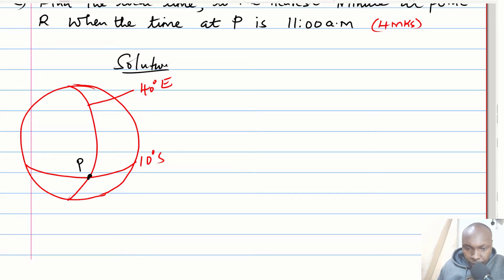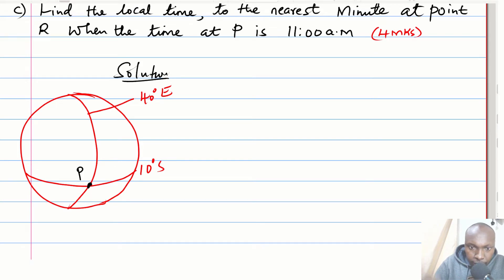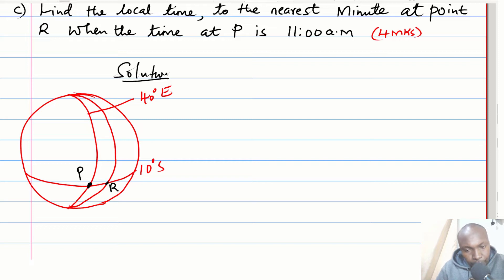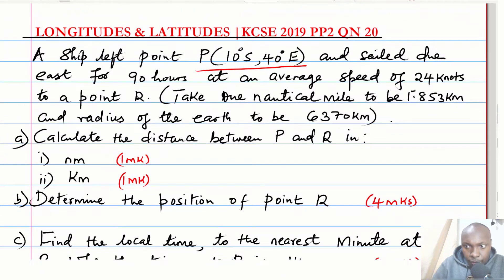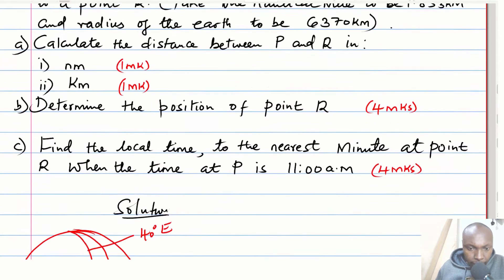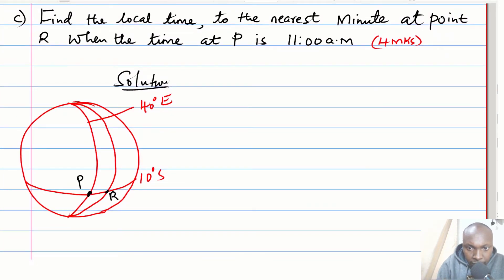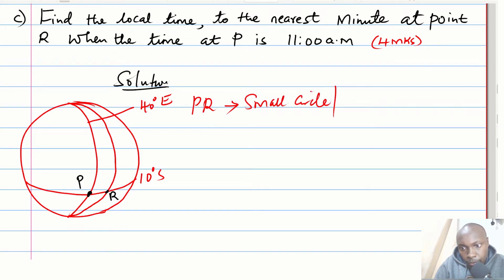We're given that the ship sailed due east — due east means directly east. So we can assume it is along the latitude. It sailed up to this point R, which is due east. We're given the speed of 24 knots. Now, to get the distance in nautical miles, we need to note that this is the distance along the circle of latitude, or what we call the small circle.